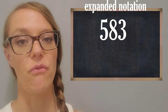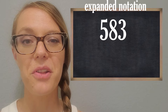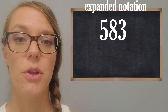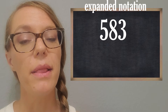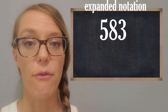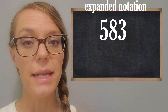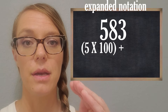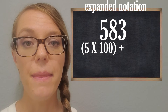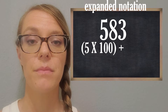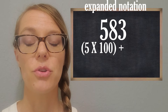Now I'm going to show you what expanded notation is. There's a difference between expanded form and expanded notation, so let me show you with the easy example of 583. It's very similar — we're still going to think about the place value of each digit, but we're going to write these as what I like to call 'groups of.' So we have a five in the hundreds place, so I say: five groups of 100. We write that in parentheses, then put a plus sign.